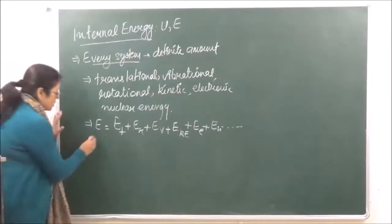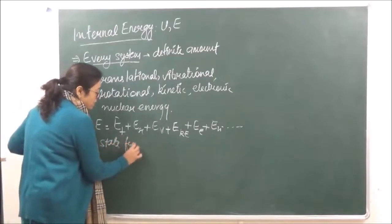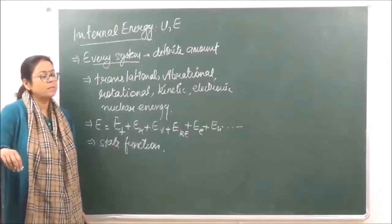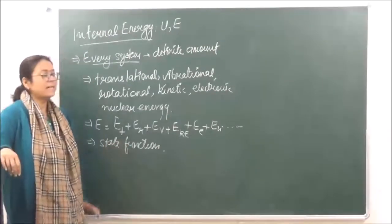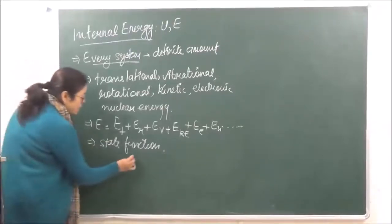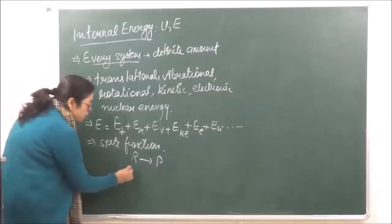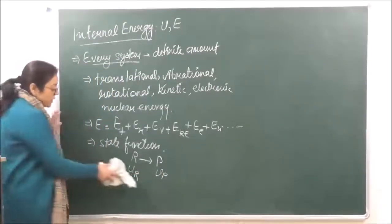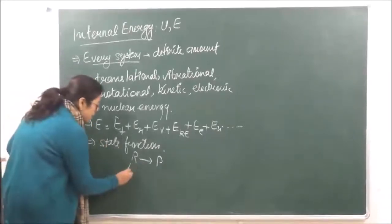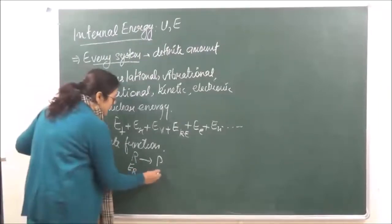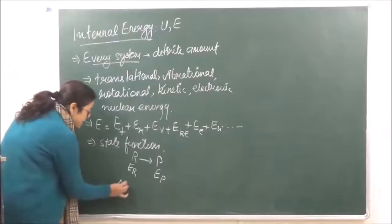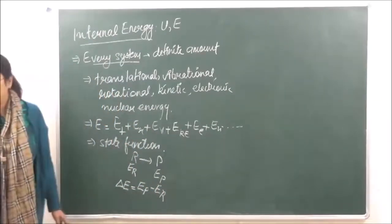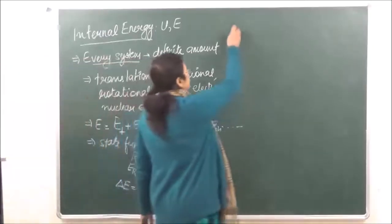Now internal energy is a state function. We know what a state function is — it does not depend upon the path but only depends upon the initial and the final state. So we say that internal energy is a state function. If we take any reaction R to products, where U_R is the internal energy of the reactants and U_P is the internal energy of the products, then delta E is given as internal energy of the products minus internal energy of the reactants.